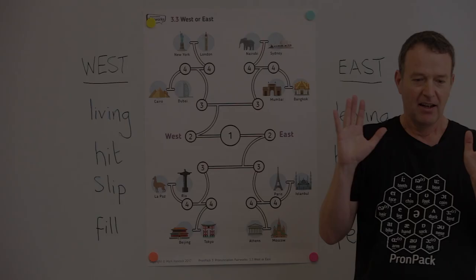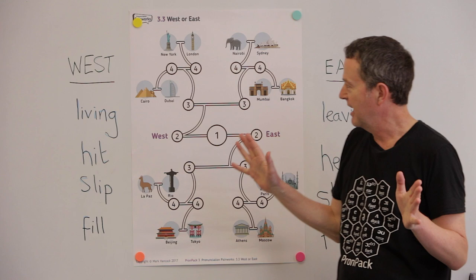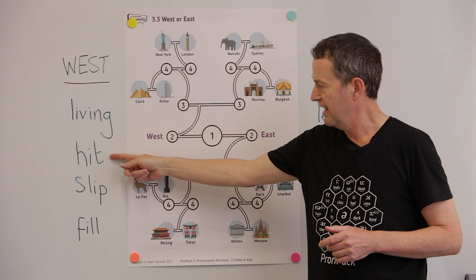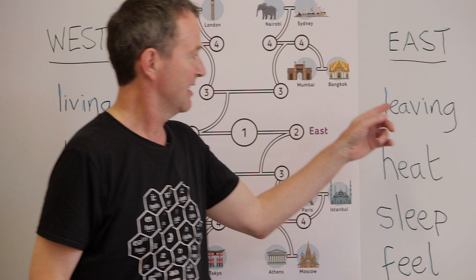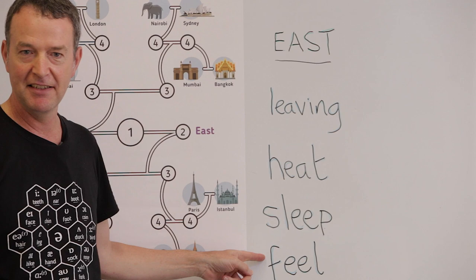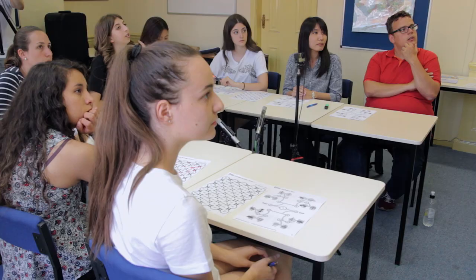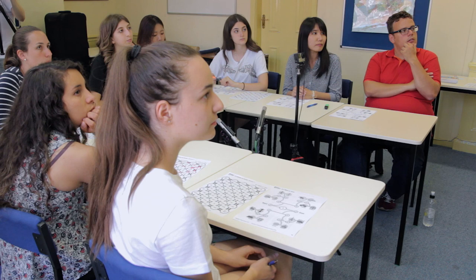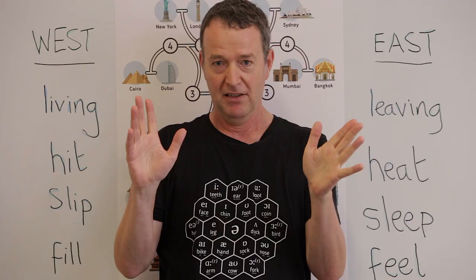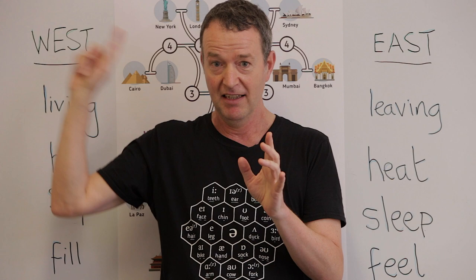You've got some words in the west: living, hit, slip, and fill. And some words in the east: leaving, heat, sleep, and feel. They're similar but a little bit different — those two words, 'living' and 'leaving'. I'm going to say one of the words and you point this way — west — or this way — east — with your finger.